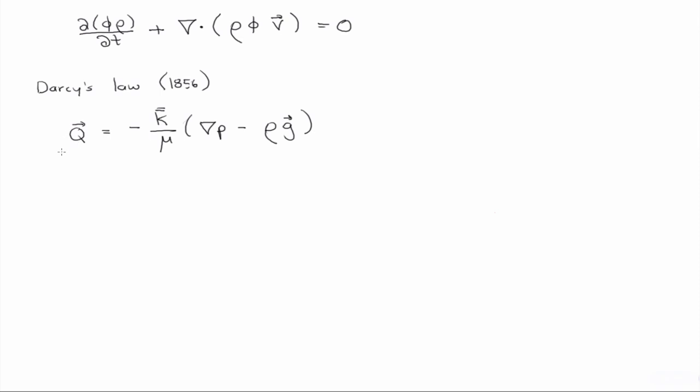And the Darcy velocity is the volume per unit time flowing through cross-section. So to get the actual velocity of the fluid in the pores, we have to divide the Darcy velocity by the porosity. So the actual velocity of the fluid flowing through the pores is the Darcy velocity divided by the porosity.